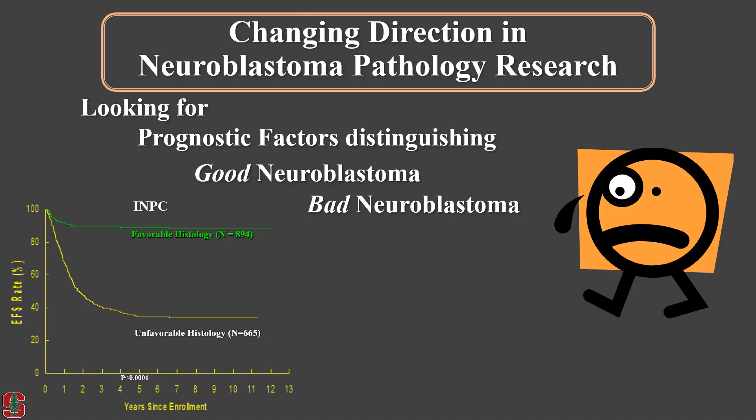We pathologists realize that we need to do more. In other words, we think that just classifying favorable histology and unfavorable histology tumors in this disease is not enough. At the same time, we clearly realize that unfavorable histology neuroblastomas are not uniform, but are heterogeneously composed of molecularly and biologically different tumors.